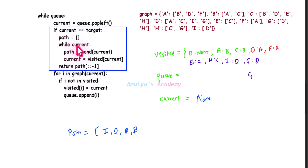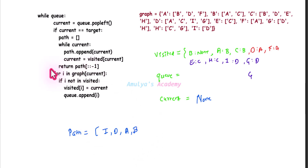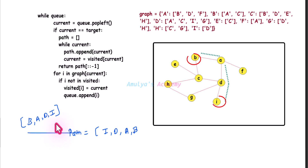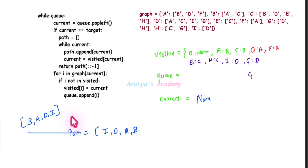Next it will execute return path reversed. So the return value is a list with B, A, D, I — it reverses the list and returns that. This is our shortest path. In the graph you can also see this is the shortest path. This is how this function works. That's it for now guys, thank you for watching — don't forget to subscribe to my channel. I will meet you in the next class, till then take care.